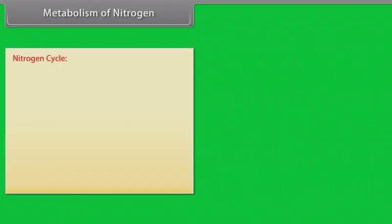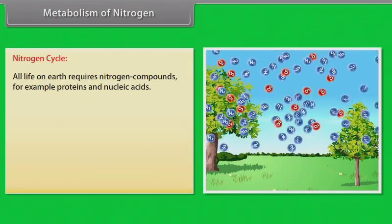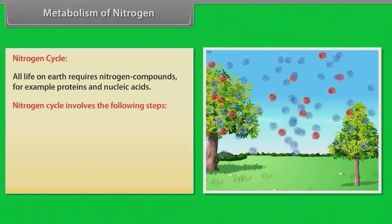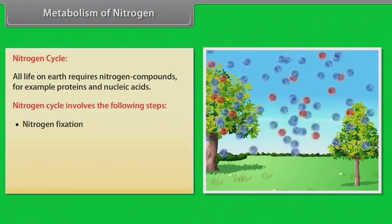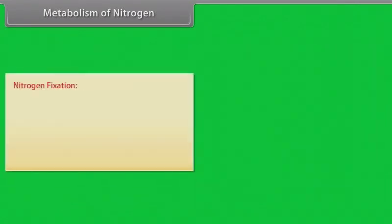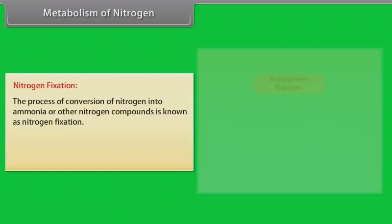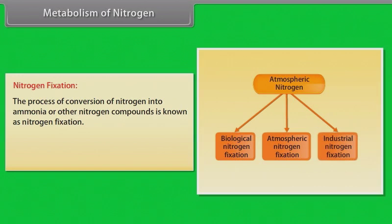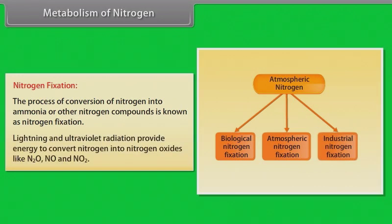Metabolism of nitrogen — the Nitrogen Cycle: all life on earth requires nitrogen compounds, for example proteins and nucleic acids. The nitrogen cycle involves the following steps: nitrogen fixation, ammonification, nitrification, and denitrification. Nitrogen fixation is the process of conversion of nitrogen into ammonia or other nitrogen compounds. Lightning and ultraviolet radiation provide energy to convert nitrogen into nitrogen oxides like N₂O, NO and NO₂.